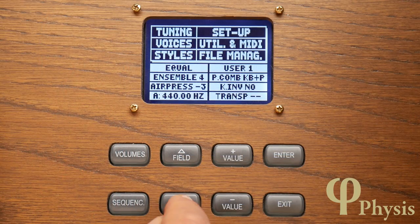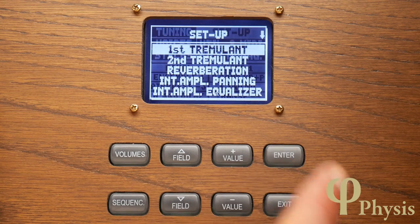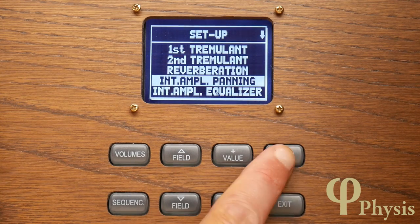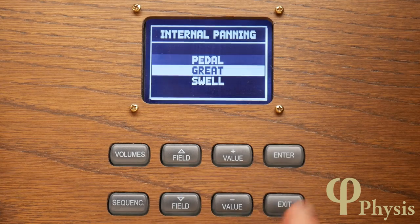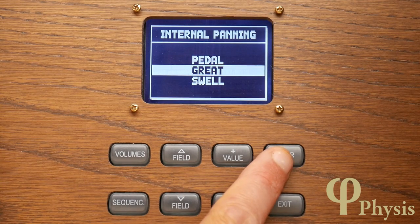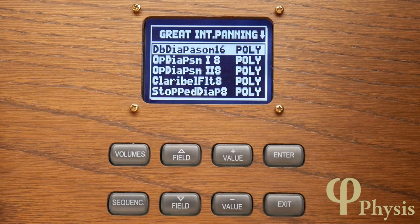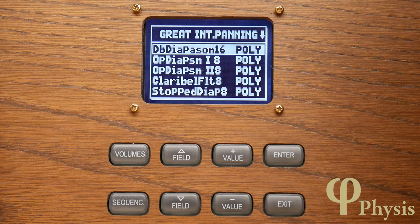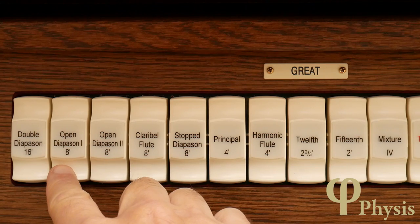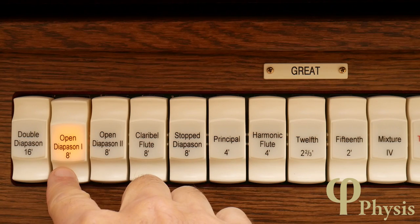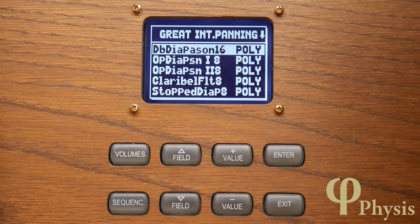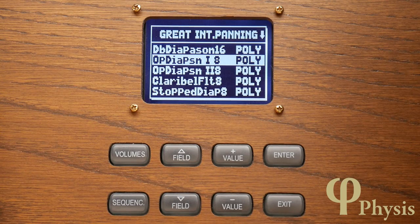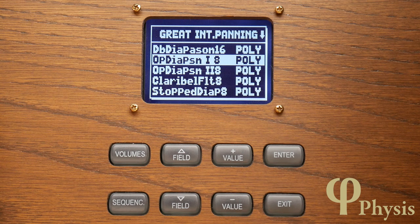If I go to Internal Amplifier Panning in the Setup menu and select one of the manual divisions on the organ, in this case the Great, you'll see a list of the stops available on that division. And as with similar functions, you can either scroll down the list to select the one to adjust or hold down a stop tab until its light flashes. So we'll select the first open diapason and you can see that it's currently showing poly.